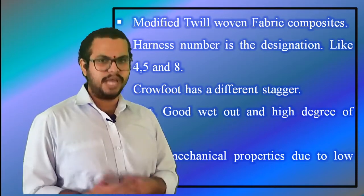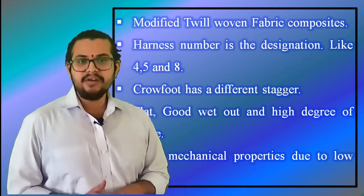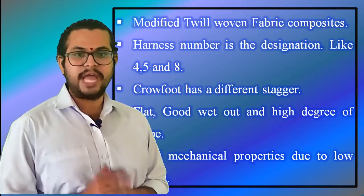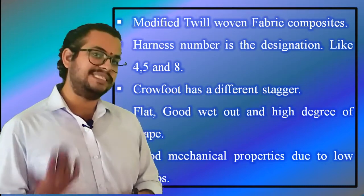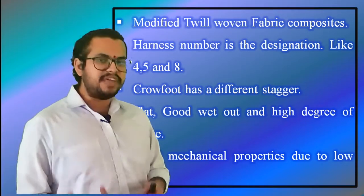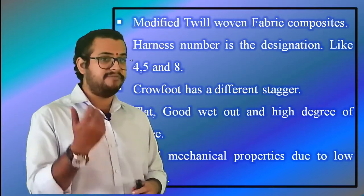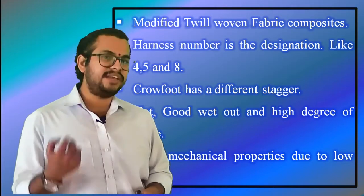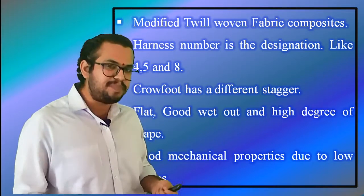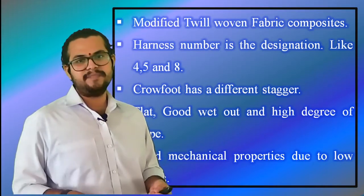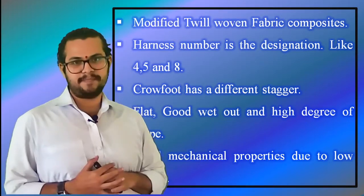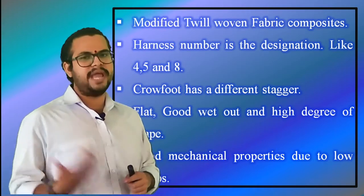Stagger is arranging things so that they do not form a straight line, especially in an alternating or zigzag pattern. In the repeat pattern, satin weaves are very flat. They have good wet-out and a high degree of drape — that is, to hang a piece of fabric over something so that it falls in folds around it and covers it. The low crimp gives good mechanical properties.